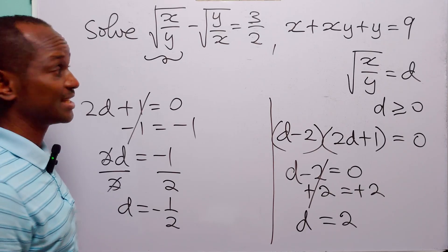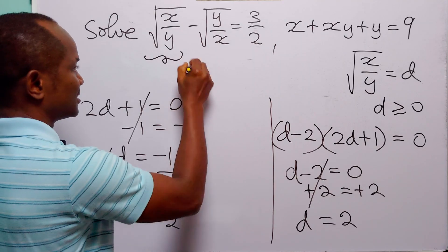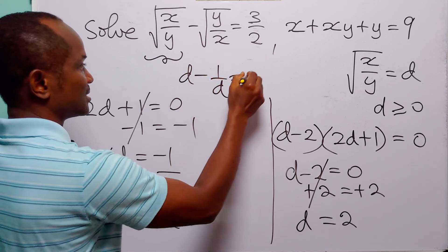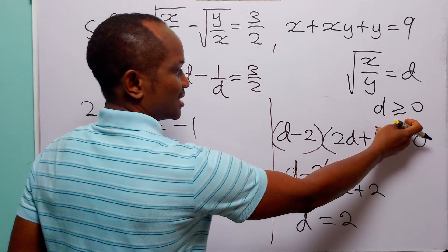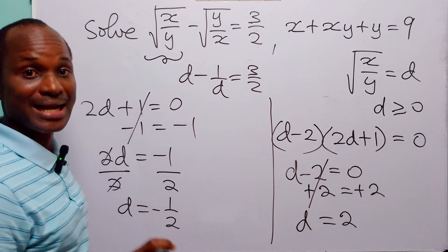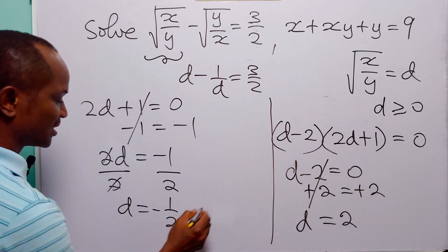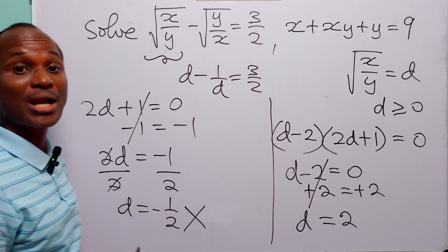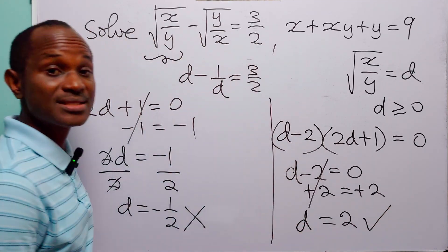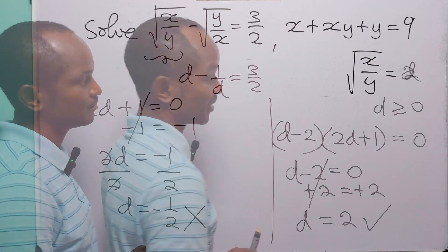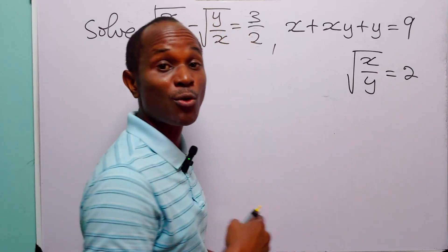We now have two values of d that satisfy d minus 1 over d equals 3 over 2. But remember the condition that d must be greater than or equal to 0 — that is, d must be positive. By this condition, d equals minus 1 over 2 is unacceptable. So the only value we take is the positive value, and ultimately the square root of x over y is equal to 2.